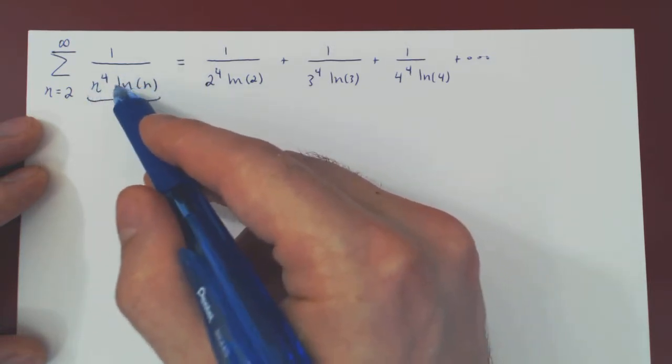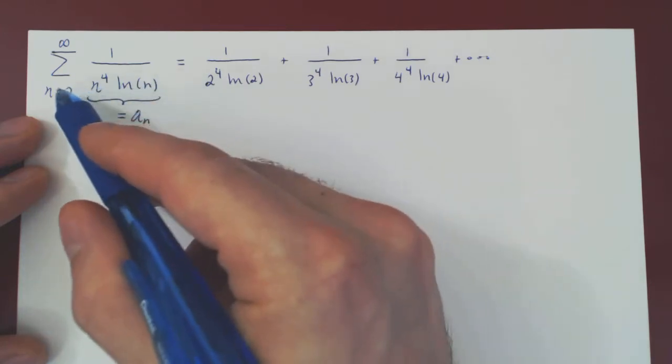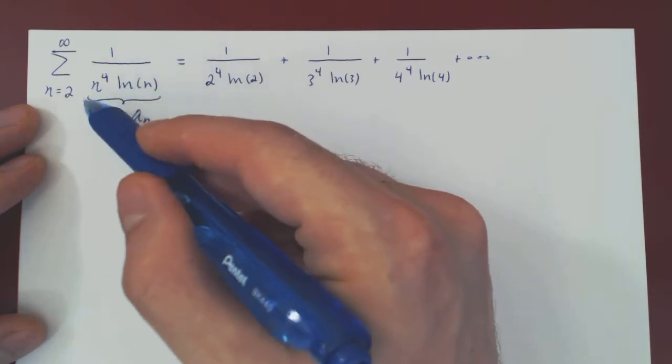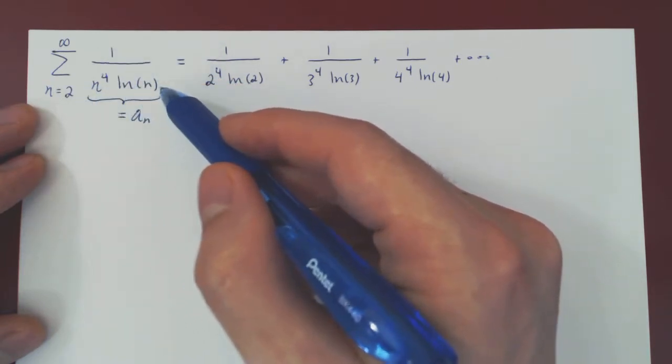much greater than a logarithmic function when n becomes bigger. And so here the intuition is that we should keep the 1 over n to the 4 and drop the ln of n.